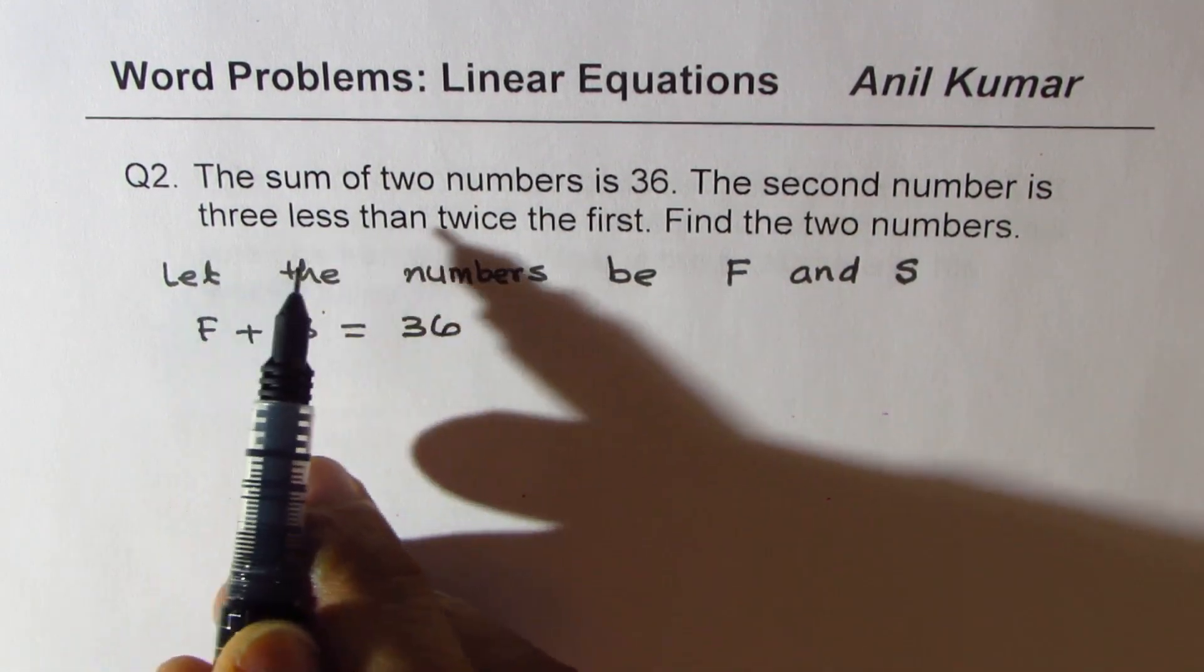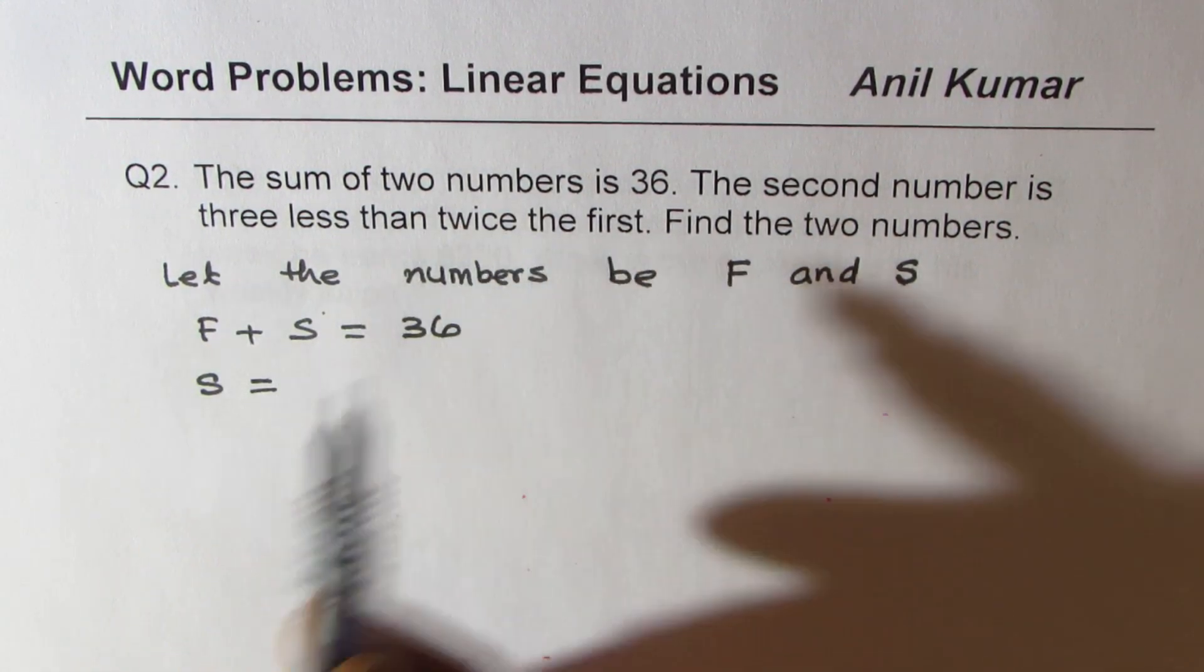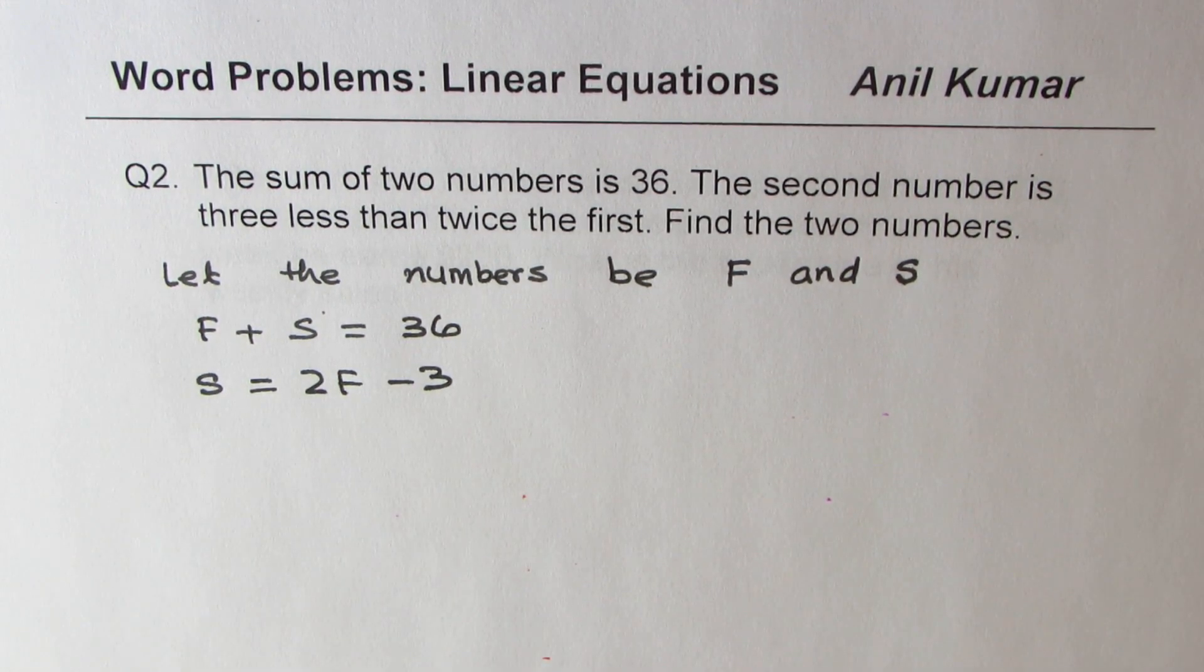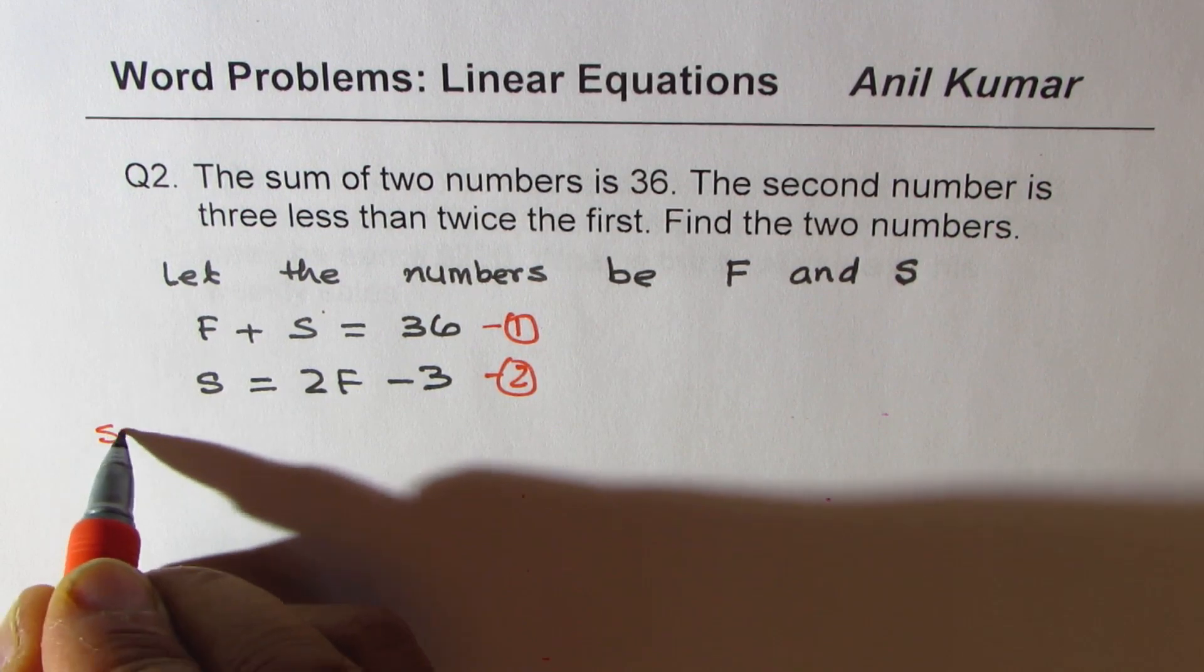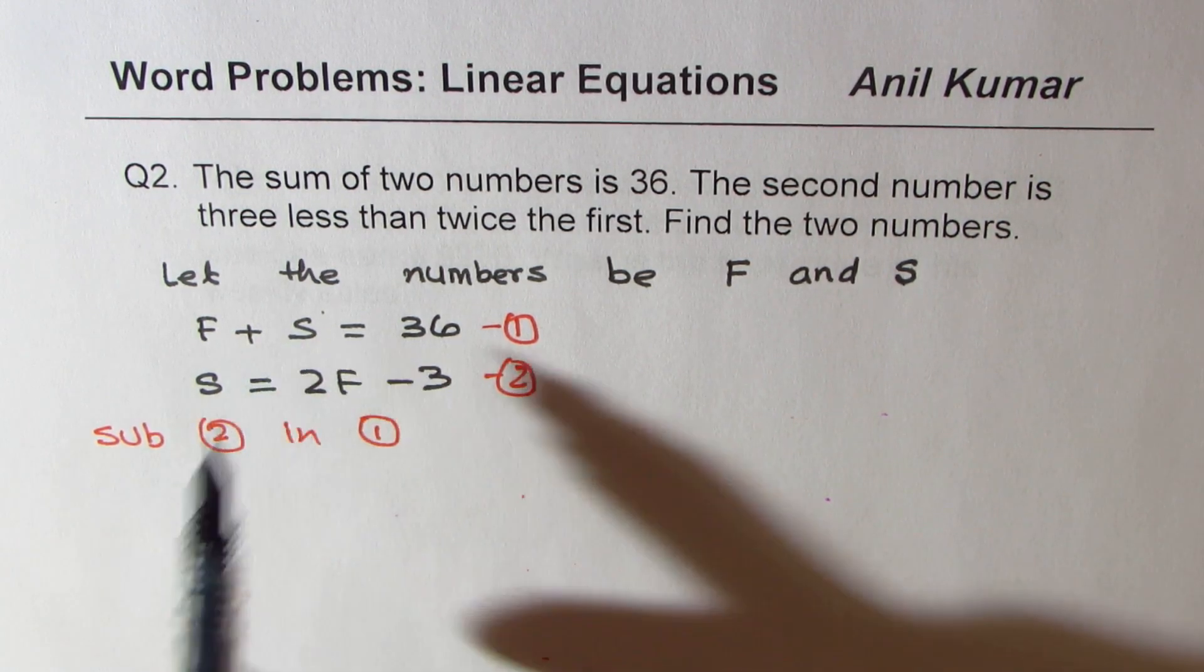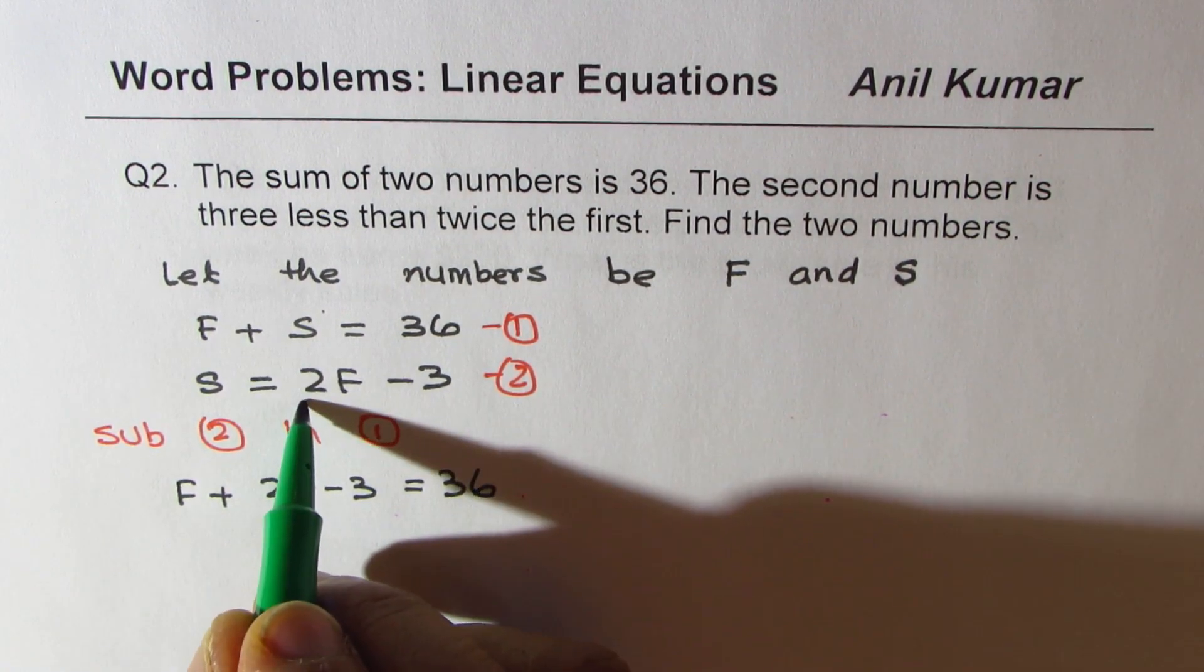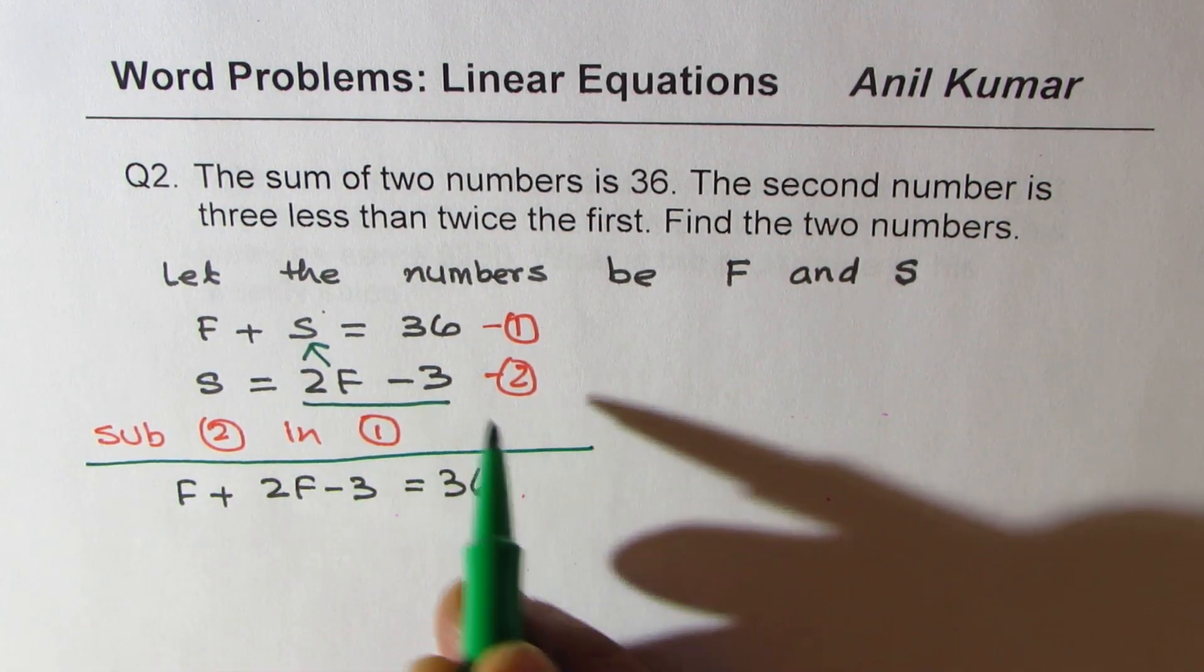The second number is three less than twice the first. So S equals 2F minus 3. So we have two different equations from two statements. Now we can substitute two in one, so we'll do sub two in one. That is the value of S goes there. So what we get here is F plus 2F minus 3 equals 36.